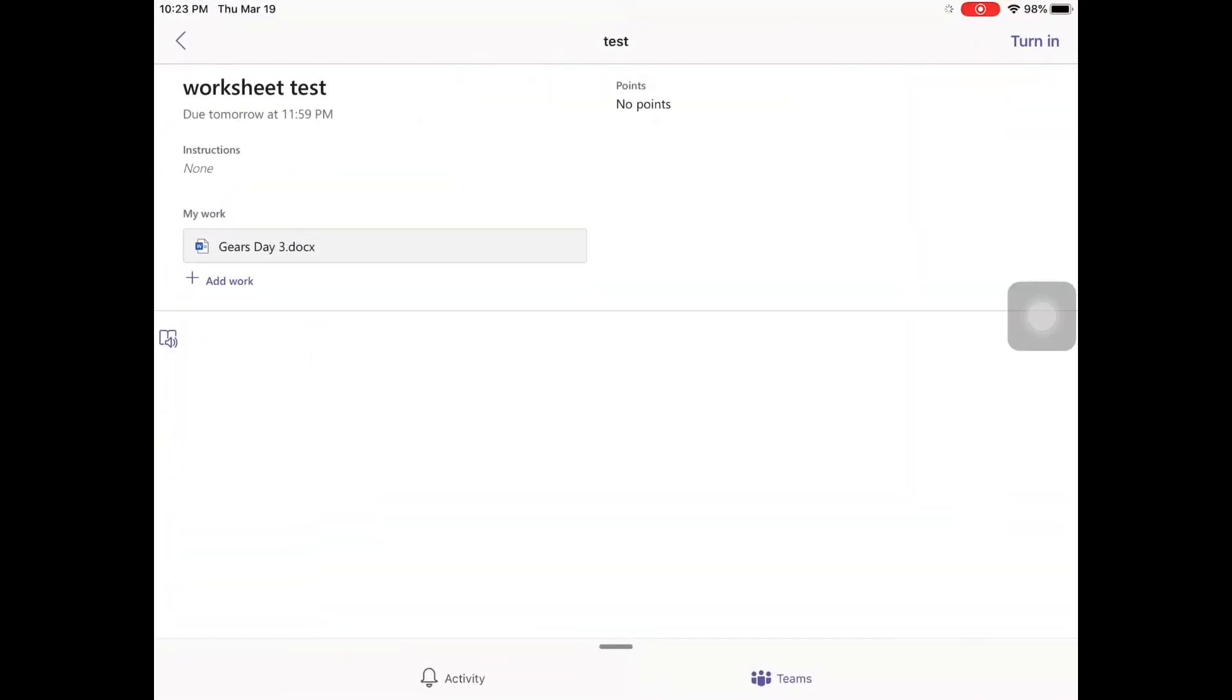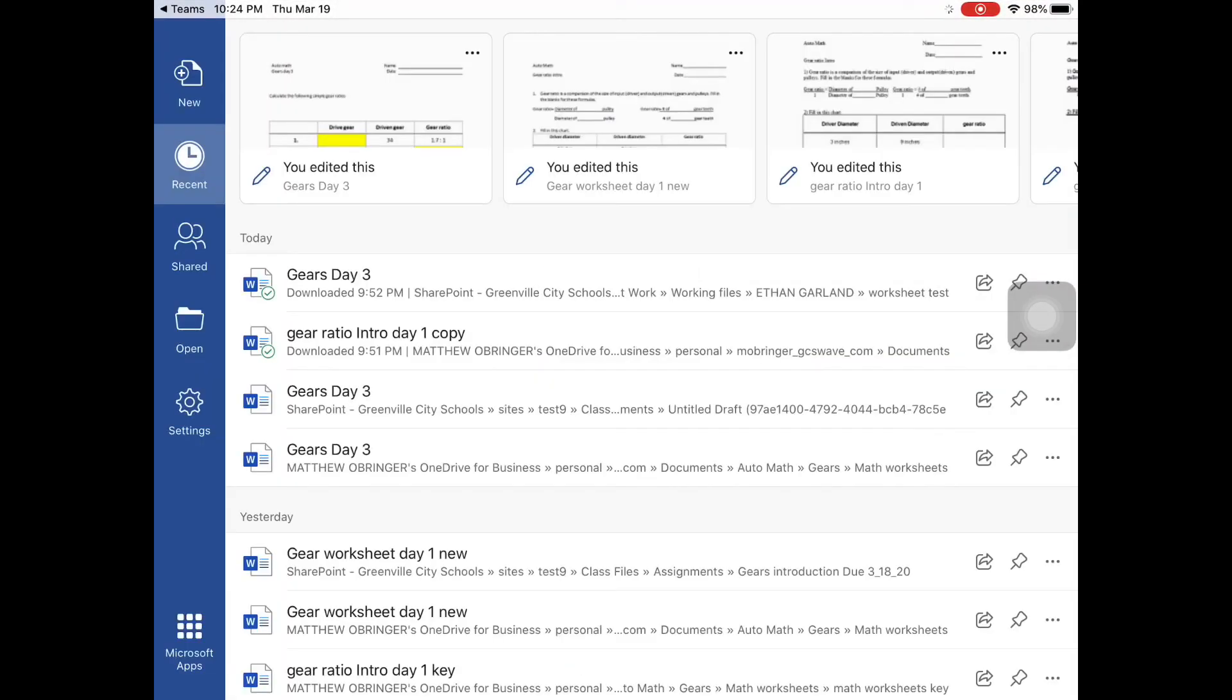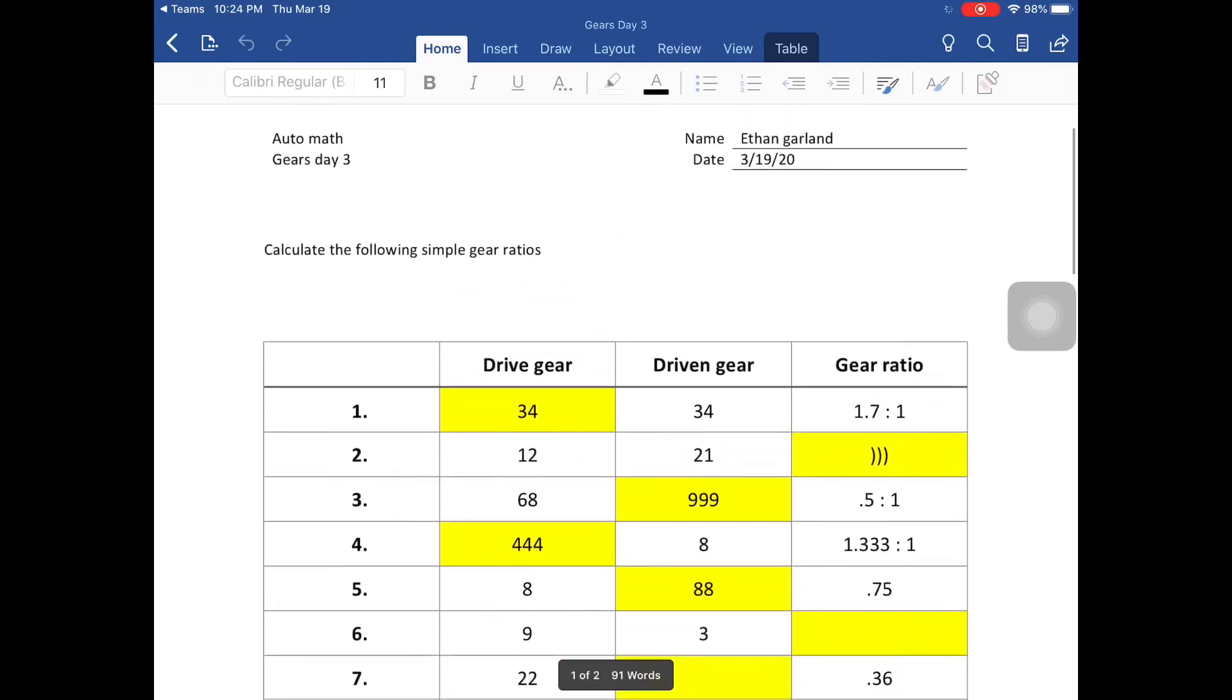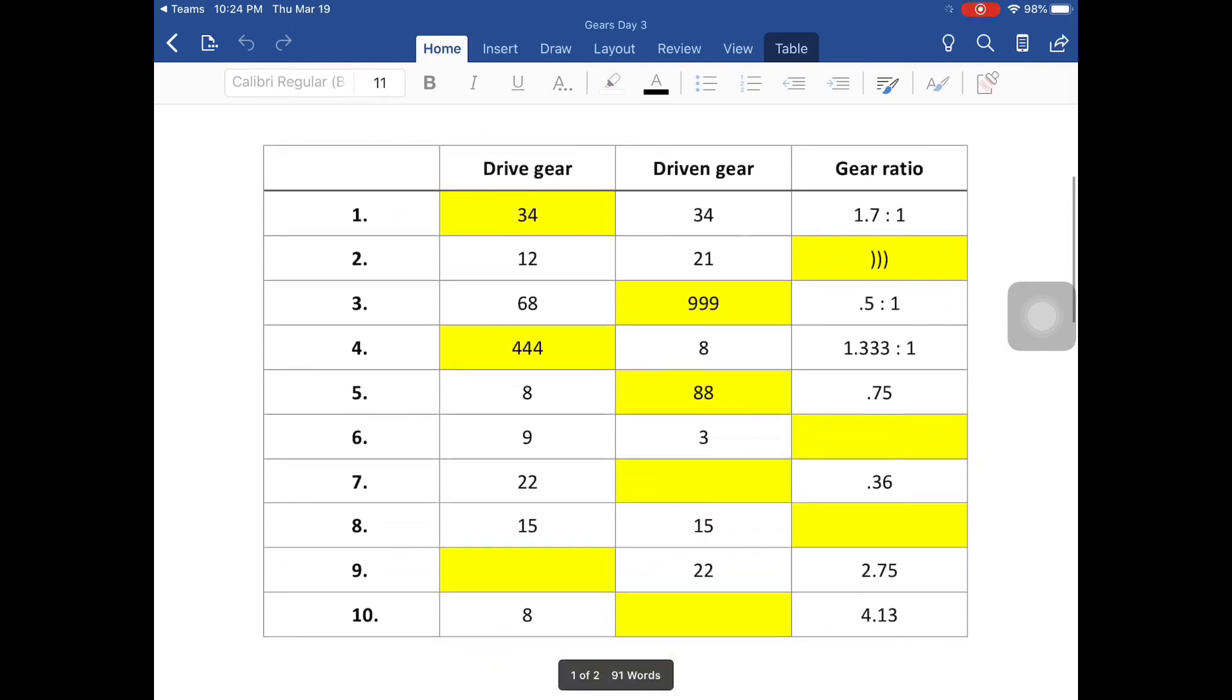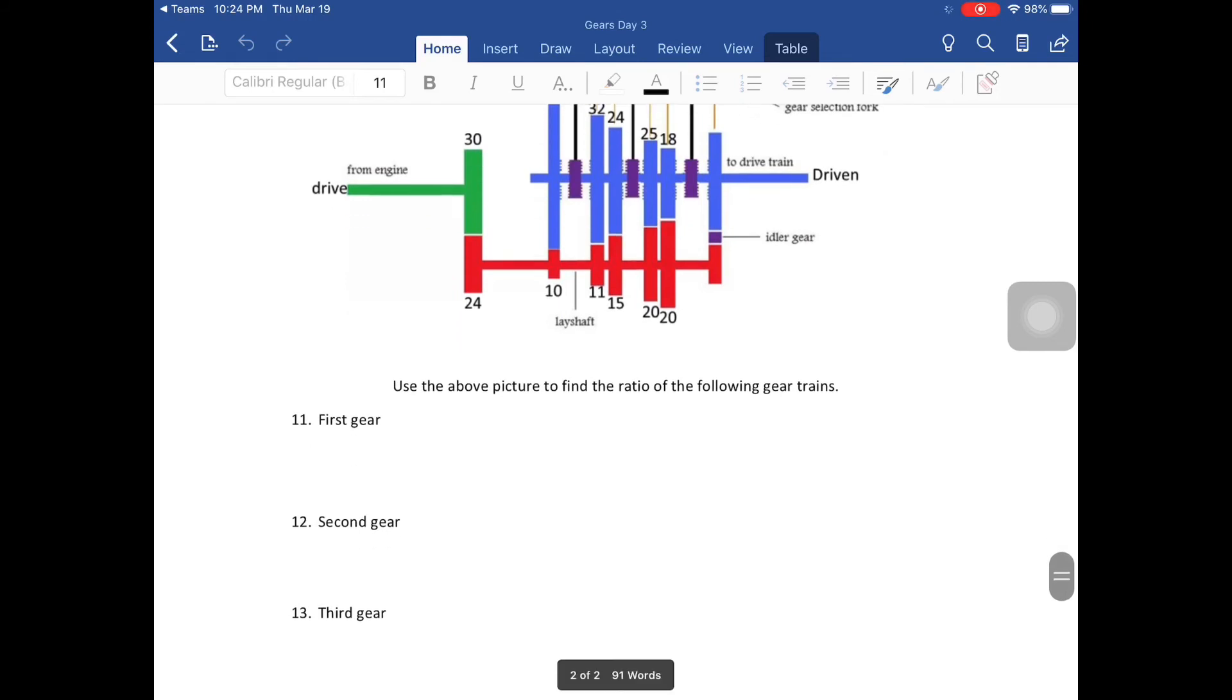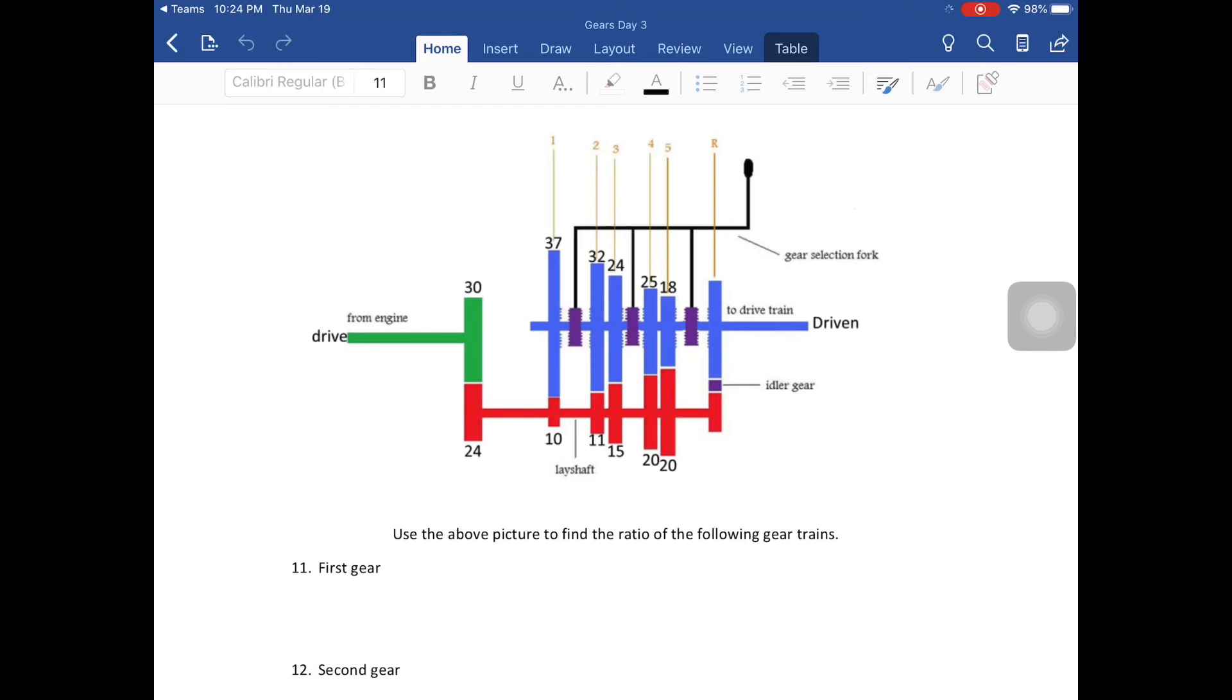We're going to go to Teams. When you go to your assignment today, you will find it's going to be Gears Day 3. This is how it was supposed to work before. We have a document up in the top right corner. We need to hit the little page symbol with the pencil and that will bring it up. Your worksheet today is 10 questions where we have to solve for the missing ratio, and then we have to find the power flow through each gear in this transmission. You need to find the ratio for each gear. Don't forget, you have to multiply the first ratio by the second ratio.